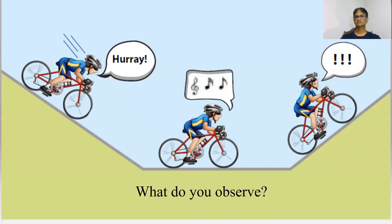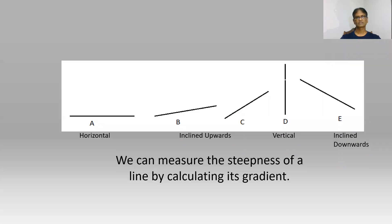Let us consider this picture. What do you observe? You will notice that the different parts of the road have different inclinations. These five lines also have different inclinations. Line A is horizontal, lines B and C are inclined upwards, D is a vertical line, whereas E is a line inclined downwards. We can measure the steepness of a line by calculating its gradient.